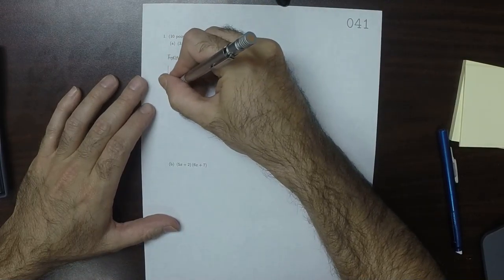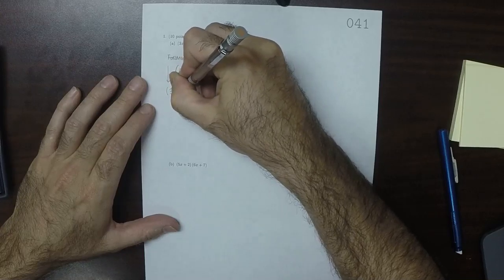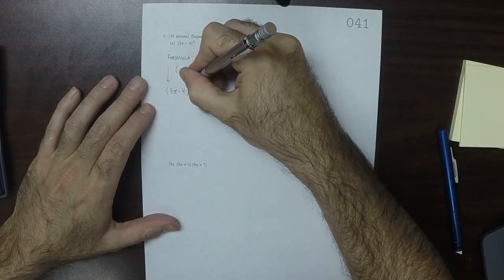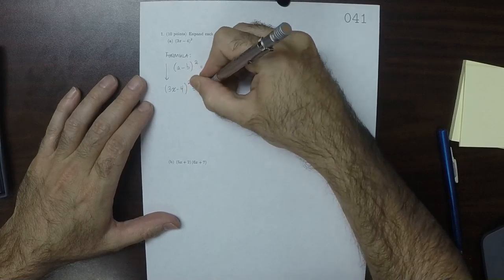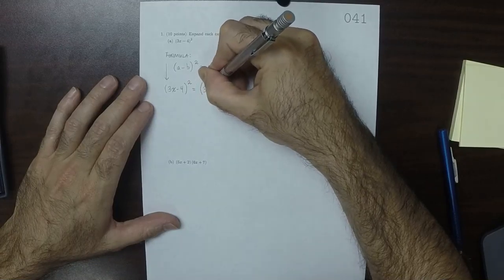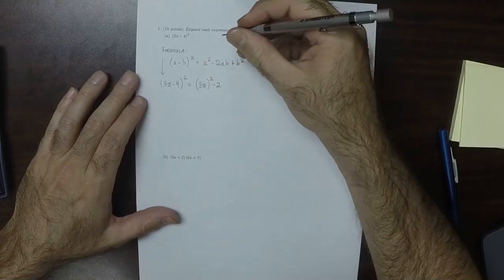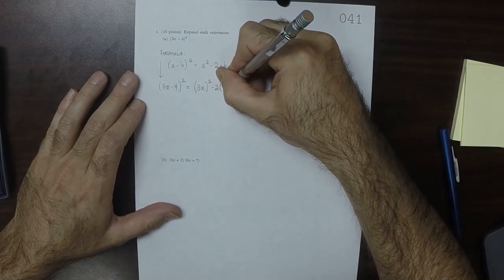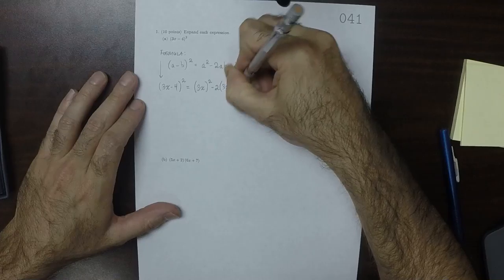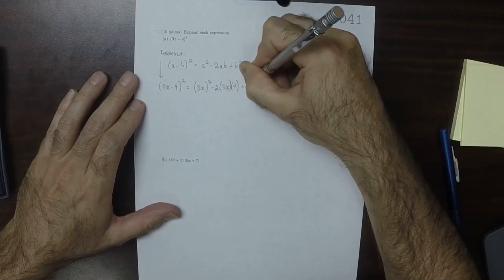So that means that 3X minus 4 squared, that would be 3X squared minus 2 times 3X times 4 plus 4 squared,